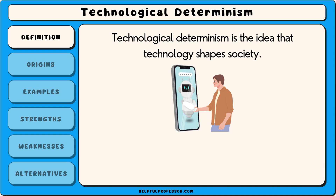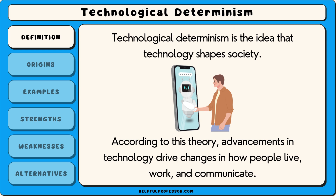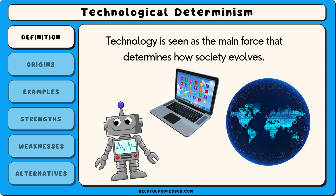Technological determinism is the idea that technology shapes society. According to this theory, advancements in technology drive changes in how people live, work and communicate. In other words, technology is seen as the main force that determines how society evolves.